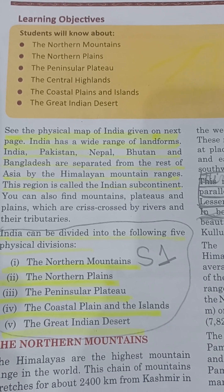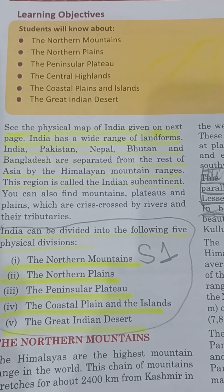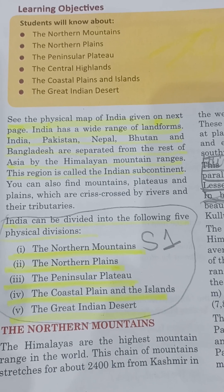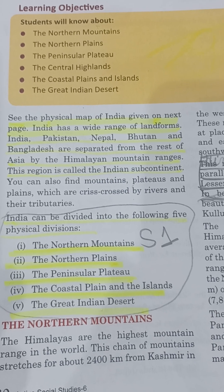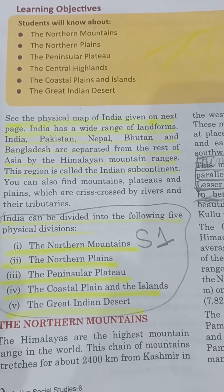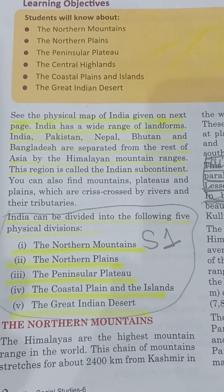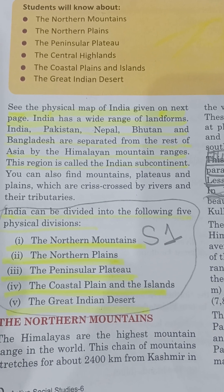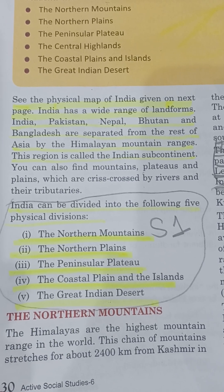See the physical map of India given on the next page. India, Nepal, Bhutan and Bangladesh are separated from the rest of Asia by the Himalayan mountain ranges — this is the reason we call it the Indian subcontinent.